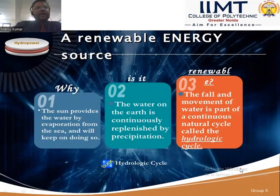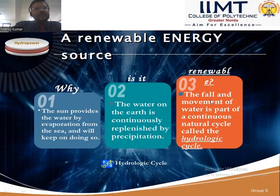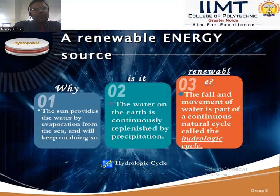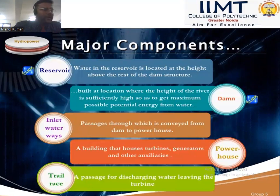Hydropower is a renewable energy source where the sun provides water by evaporation from the sea. The water on earth is continuously renewed by precipitation, and the fall and movement of water is part of a continuous natural cycle called the hydrologic cycle. Renewable energy is better than non-renewable energy such as petrol, diesel, gas, and fuel, which are harmful to the environment.